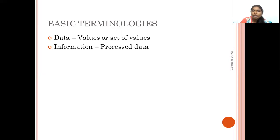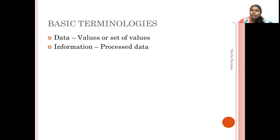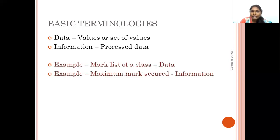For example, consider a set of students in a subject with their marks and numbers — that is data. But when we identify the top student in this class for a particular subject, that becomes information, because it is meaningful and derived by processing the raw data.